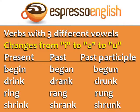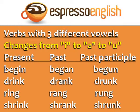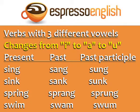Verbs with three different vowels: in this group, the vowel changes from I to A to U. Begin — began — begun. Drink — drank — drunk. Ring — rang — rung. Shrink — shrank — shrunk. Sing — sang — sung. Sink — sank — sunk. Spring — sprang — sprung. Swim — swam — swum.